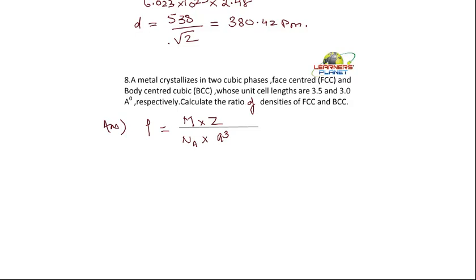So, the density for FCC is equal to the mass of one atom multiplied by how many particles are there in an FCC lattice? Per unit cell, it comes out to be 4, divided by the Avogadro number Na into A cube.